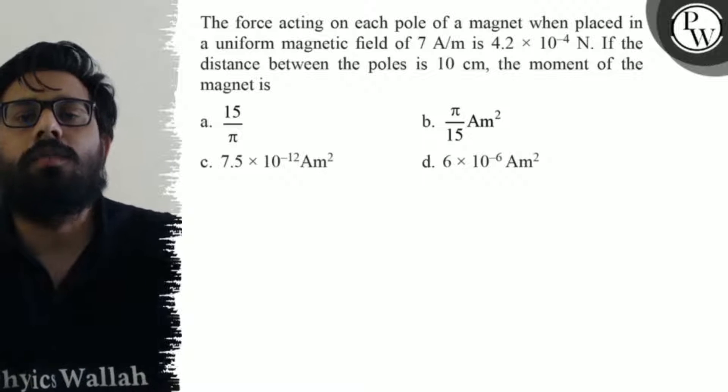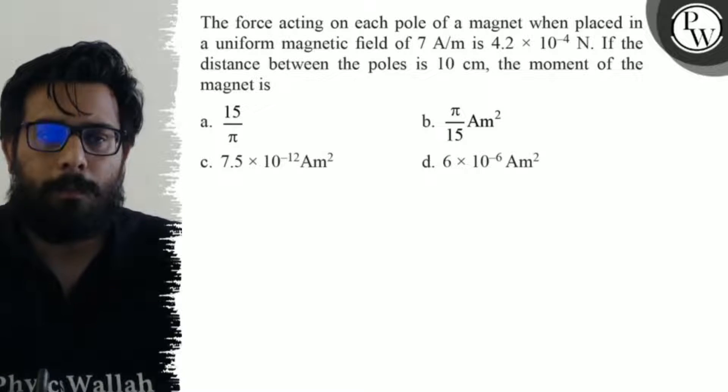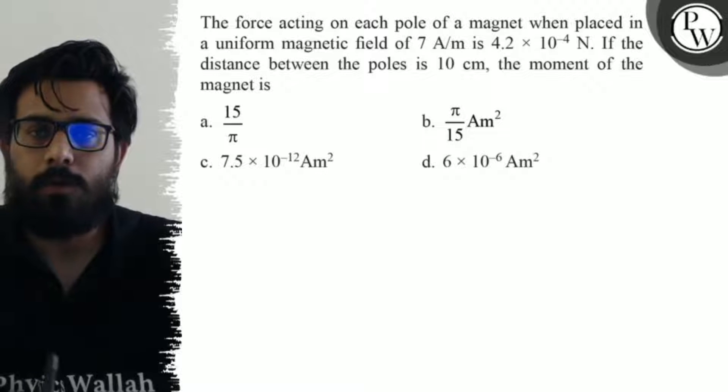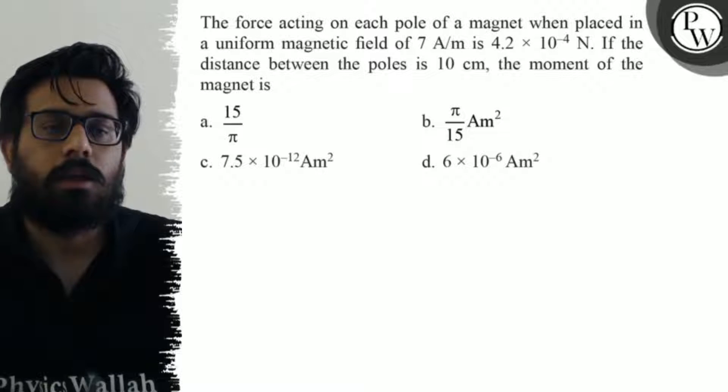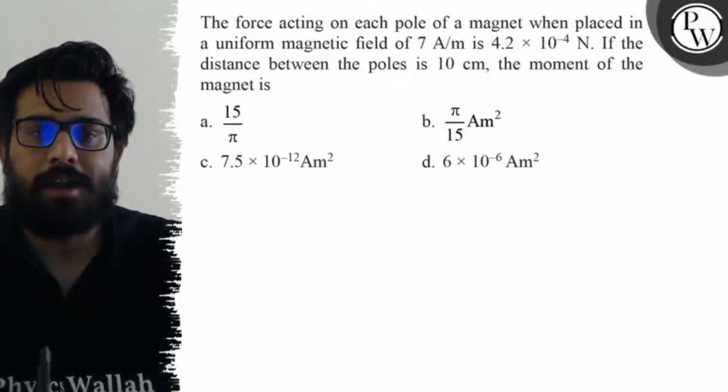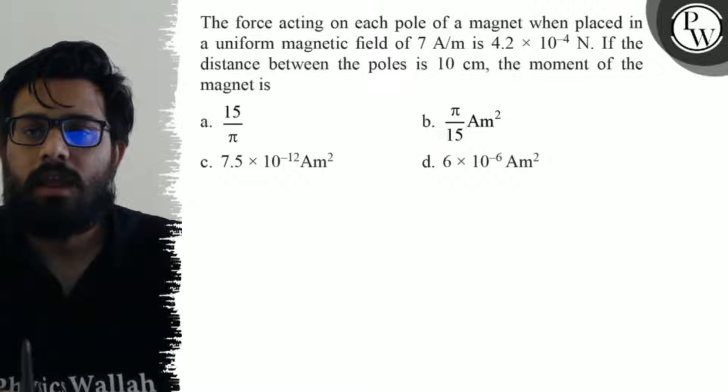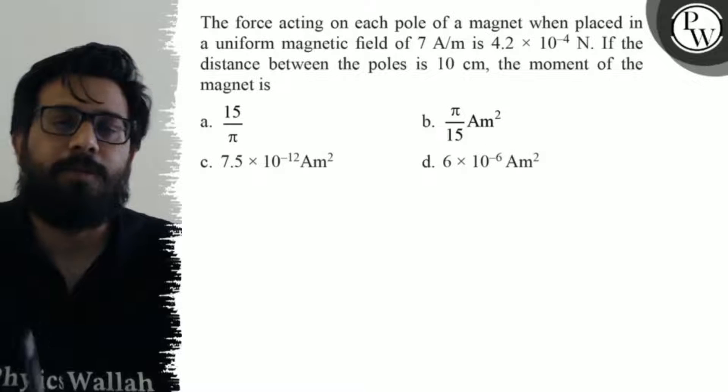the moment of the magnet is: first option is 15 upon pi. Second option says pi upon 15 ampere meter square. Third option says 7.5 into 10 to the power minus 12 ampere meter square. And your fourth option says 6 into 10 to the power minus 6 ampere meter square.